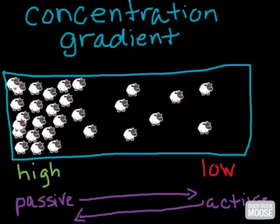When we talk about transport across the cell membrane, one thing that's mentioned a lot is the concentration gradient. So we're talking about how concentrated things are on one side or the other of the cell membrane.